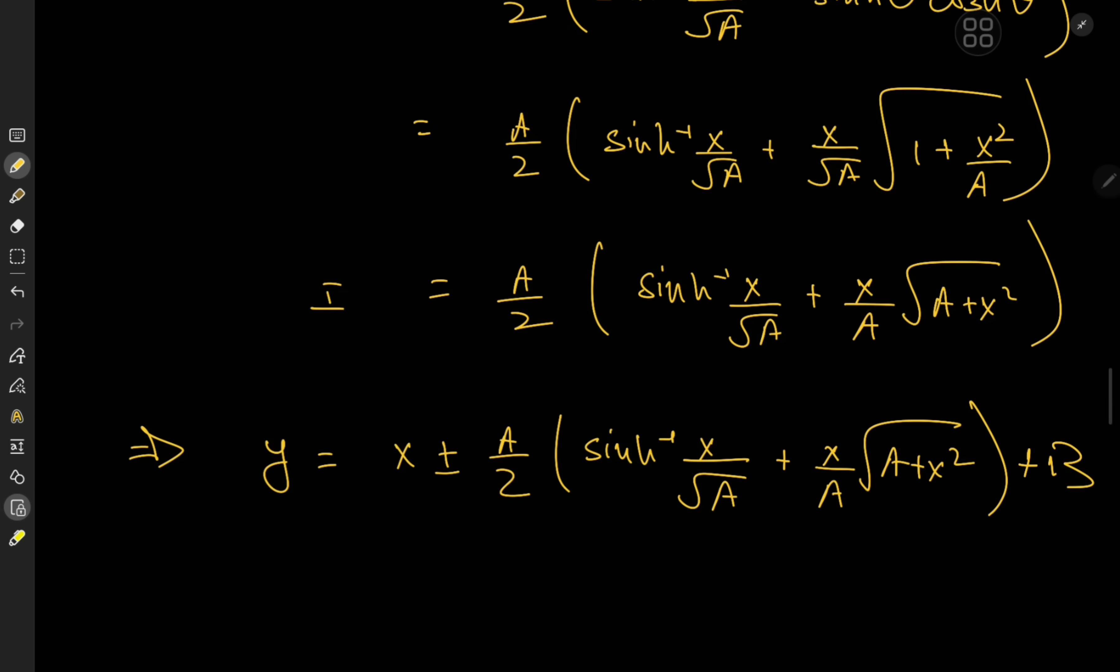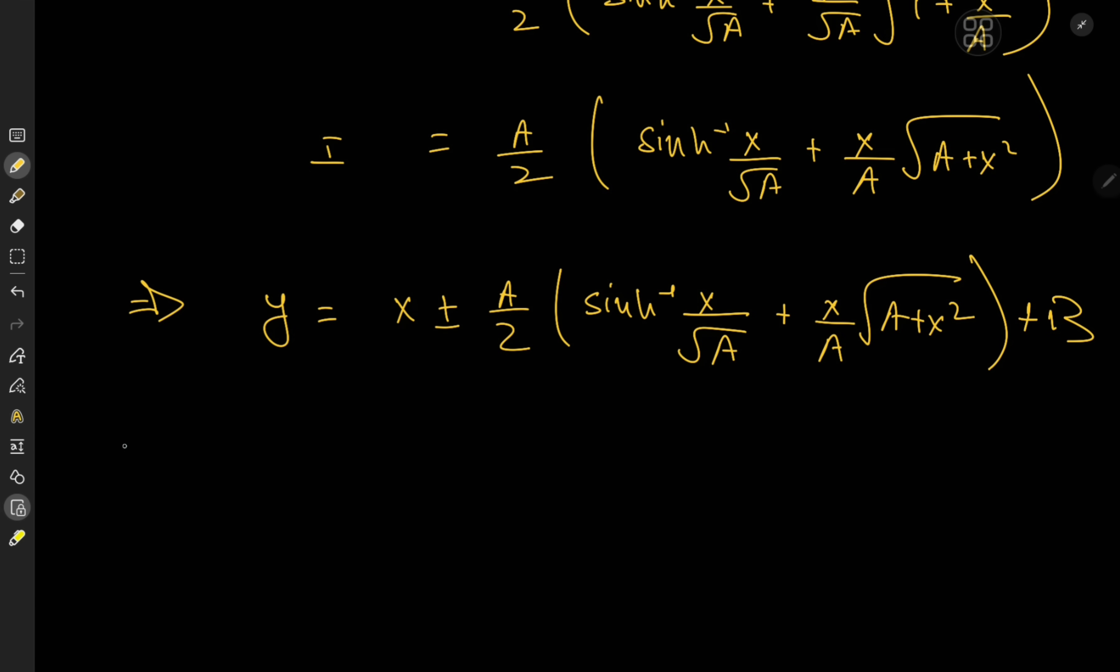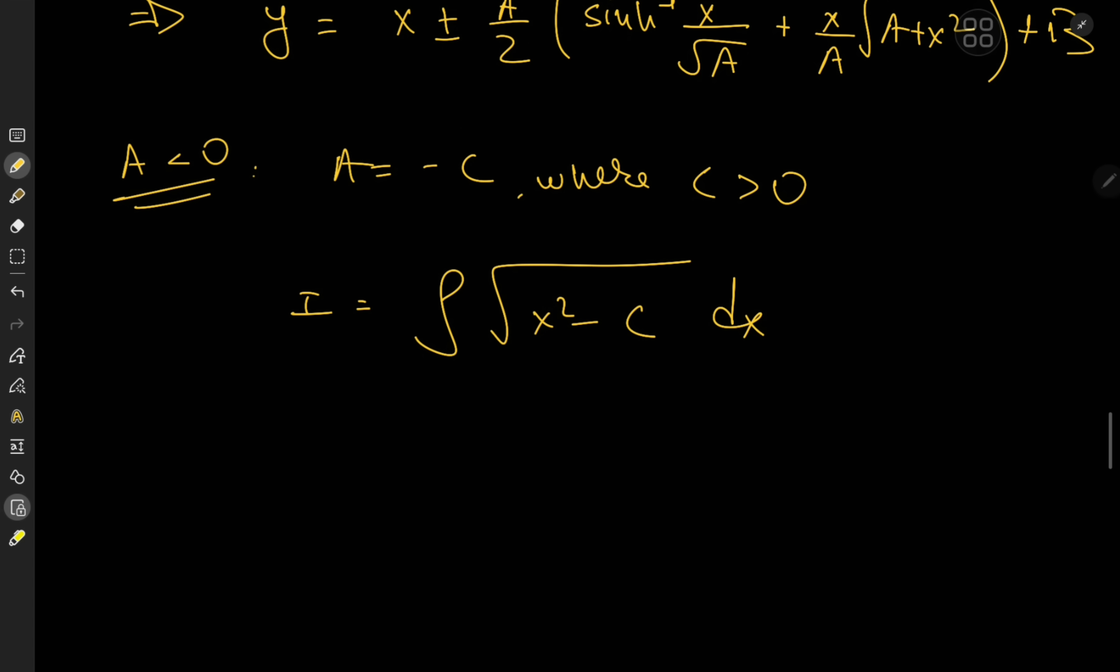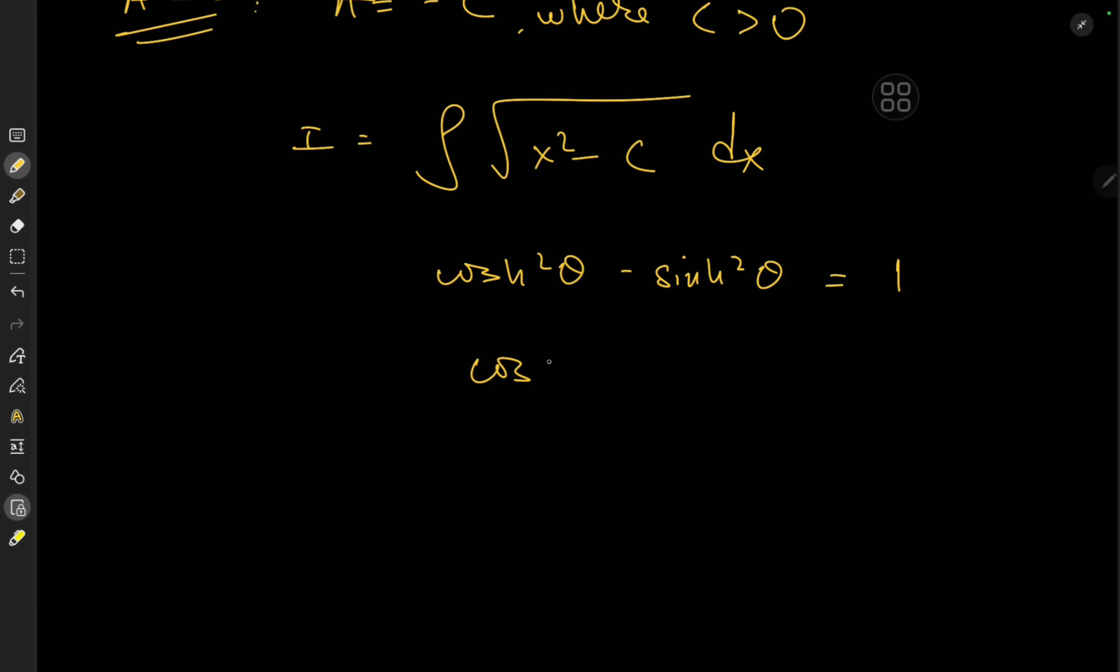But of course that was the case of a being positive, but what about the case of a being less than 0? So if a is less than 0, then we'll just call a here equal to negative c, where c is positive. In that case we're interested in evaluating the integral of √(x² - c) dx, which can still be solved via a hyperbolic substitution because we recall cosh² theta - sinh² theta is equal to 1. But that means cosh² theta - 1 is equal to sinh² theta. So with a transformation of letting x equal cosh theta, we'll get yet another solution in terms of hyperbolic functions, only this time in terms of the hyperbolic cosine function.